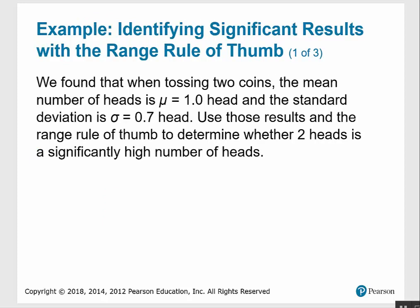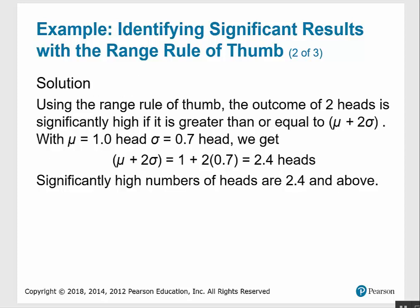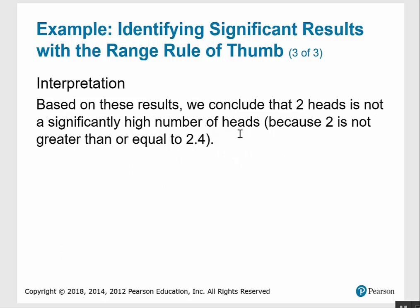Example: Identifying significant results with the range rule of thumb. When tossing two coins, the mean is 1 head and the standard deviation is 0.7. Using the range rule of thumb, the cutoff for significantly high is the mean plus 2 times the standard deviation: 1 + 2(0.7) = 2.4 heads. Significantly high numbers of heads are 2.4 and above. Therefore, 2 heads is not a significantly high number of heads because 2 is not greater than or equal to 2.4.